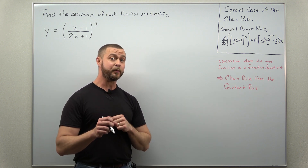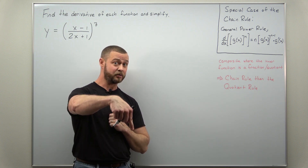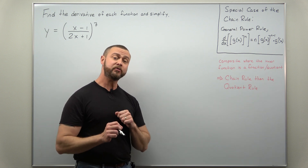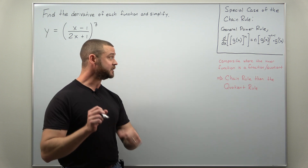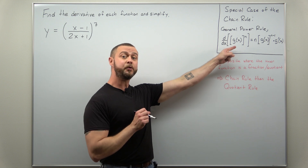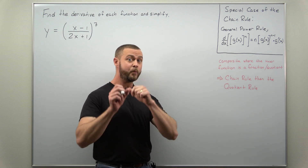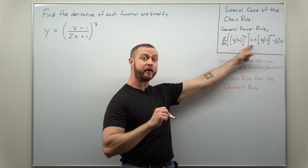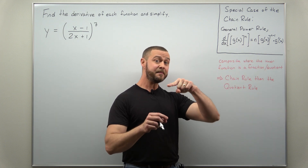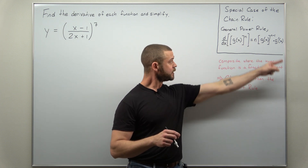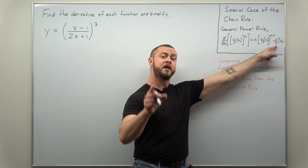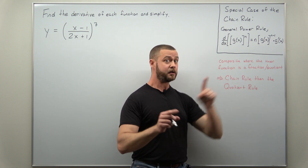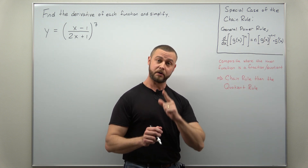If you're not familiar with that, I have a link down below in the description so check that out. The general power rule says that when we have a function raised to a power, we bring the power down, keep the inside the same, subtract one from that power, and then multiply by the derivative of the inside because we're applying the chain rule.